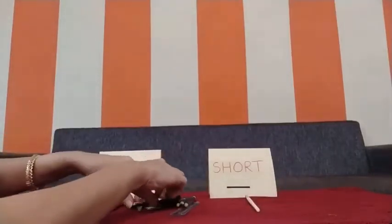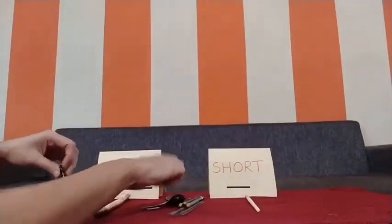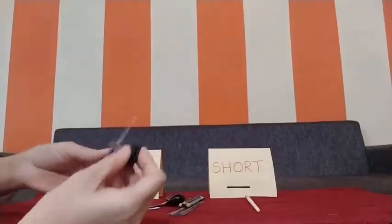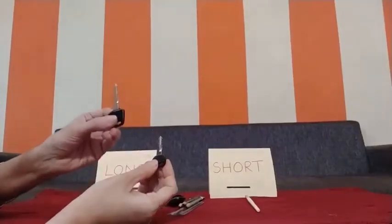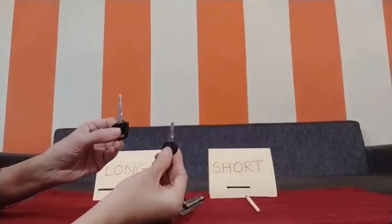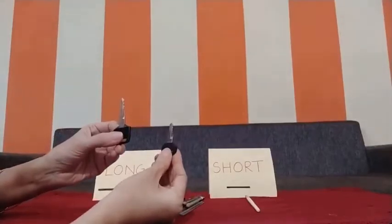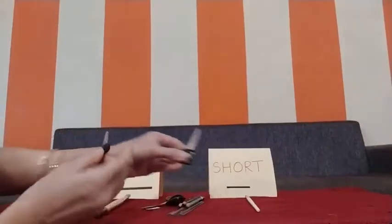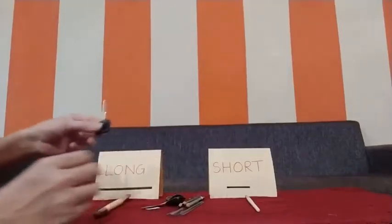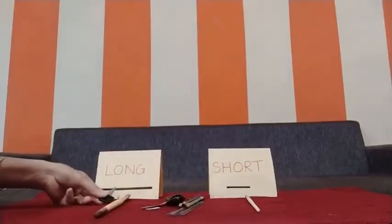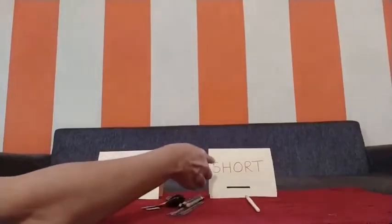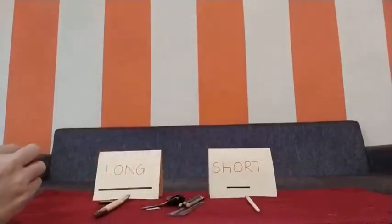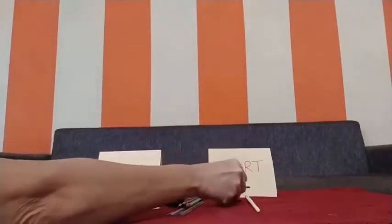Now let us see these two keys. This is a long key and this is a short key. So where will the long key go? The long key will come here, and the short key — short is written over there, so the short key will go there.